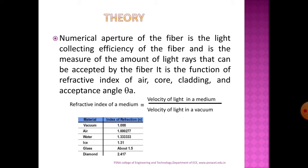Numerical aperture is the light gathering or light collecting ability of the fiber. It is an important parameter that relates the refractive index of the core, the refractive index of the cladding, and the acceptance angle. Refractive index is the ratio of velocity of light in a medium to the velocity of light in vacuum. For glass, the refractive index will be 1.5; for other materials, this value will differ.